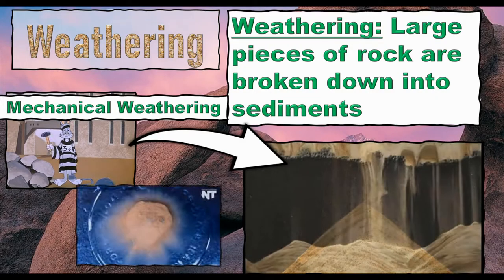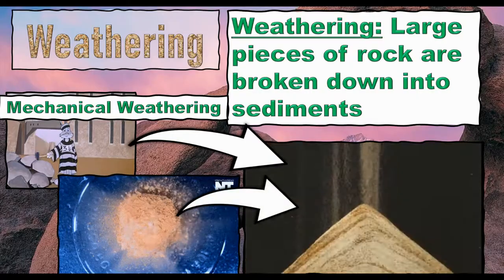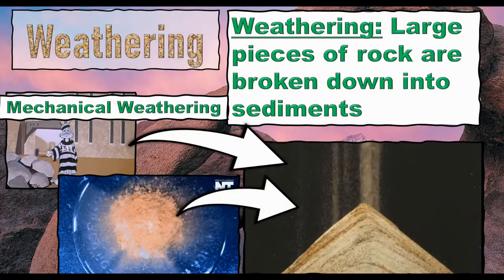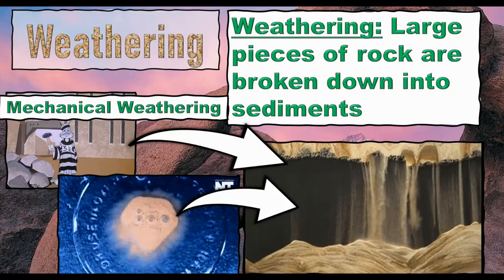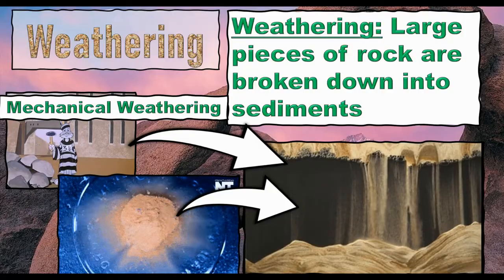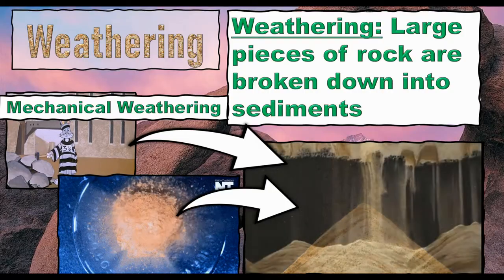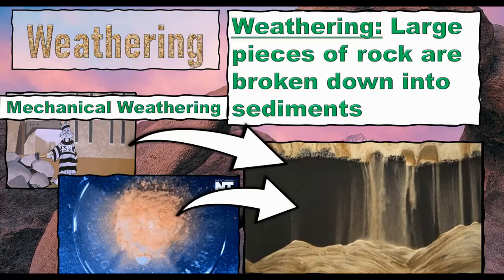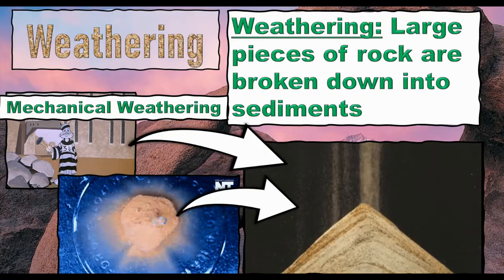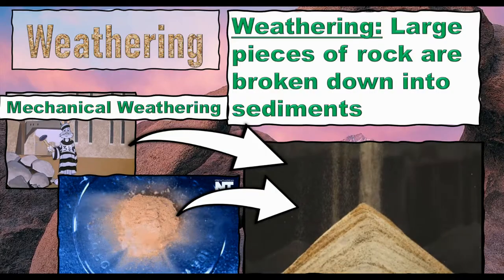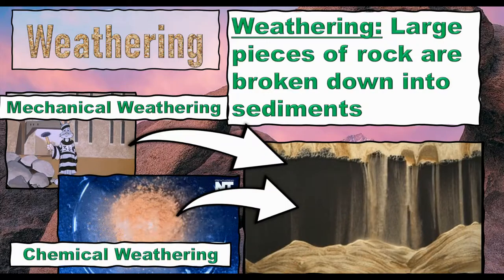But you can also take a rock and dissolve it chemically. This happens with limestone all the time. One of the reasons why acid rain is so damaging to certain buildings and structures is because it contains enough acid to barely start dissolving the limestone found in a lot of ancient sites. This is called chemical weathering.